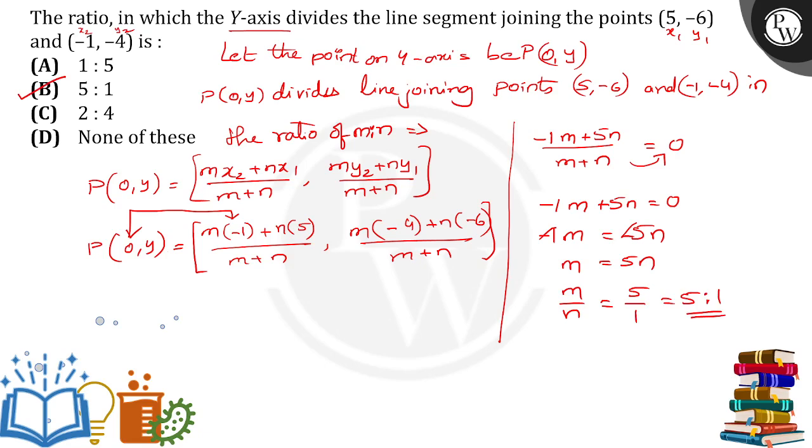So option B is the particular ratio where the y-axis divides these two points, the ratio of 5 is to 1. Thank you.